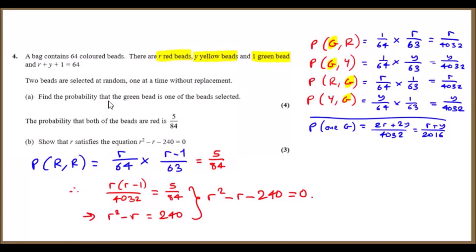Part A: Find the probability that the green bead is one of the two selected. This is easy—just pick all the combinations where green is selected. For example, the first pick could have been green, then red for the second. Or the first pick could have been green, then yellow. Or in this case, the first pick could have been red or yellow, then green.